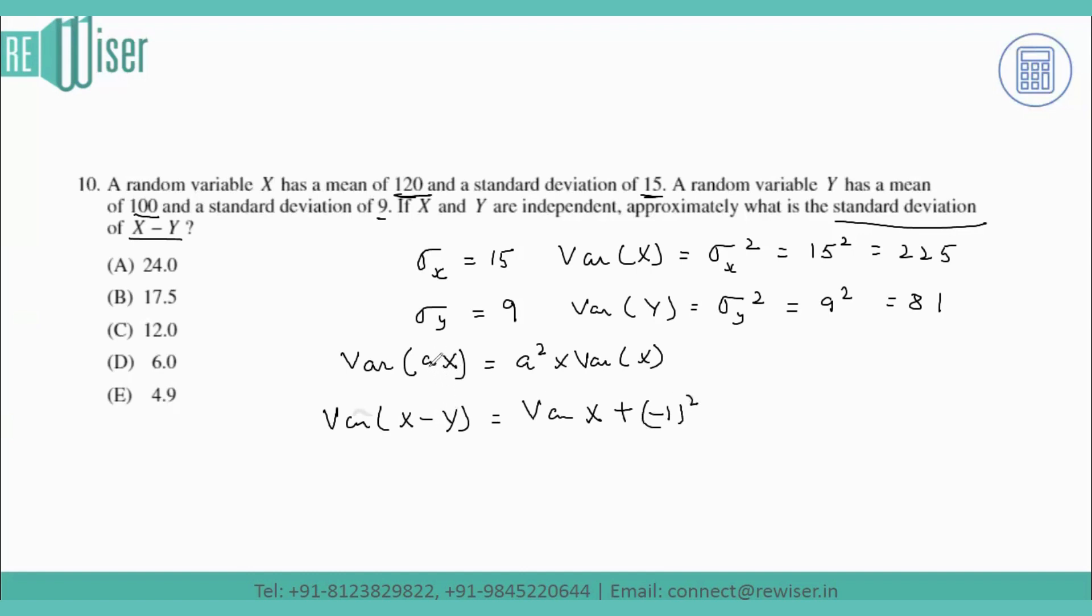Variance of minus Y means the value of a becomes minus 1. If I square the minus 1, I get a positive value times the variance of Y. In this formula, a equals minus 1, so it becomes variance of X plus variance of Y.